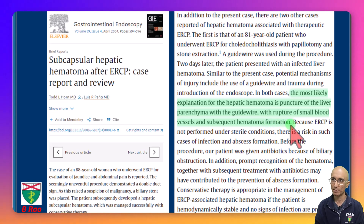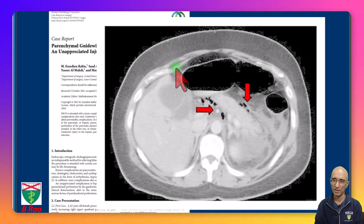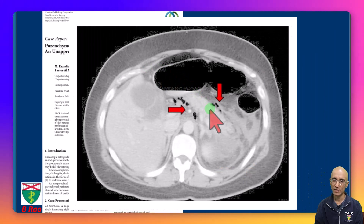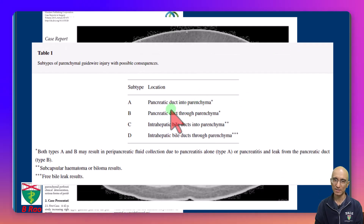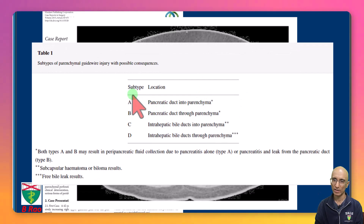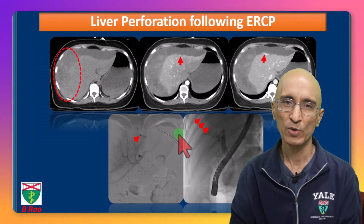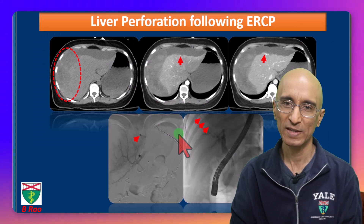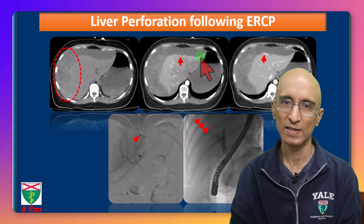It is also important to remember that because ERCP is not a sterile procedure, these hematomas can get infected. In this case report, they demonstrated a few locules of free gas surrounding the pancreas, just as seen in our patient. They proposed a classification system for parenchymal guide wire injury, and our patient probably had either a type C or type D injury. This case of incredibly rare liver parenchymal perforation following ERCP is hopefully informative. Thanks for your attention.